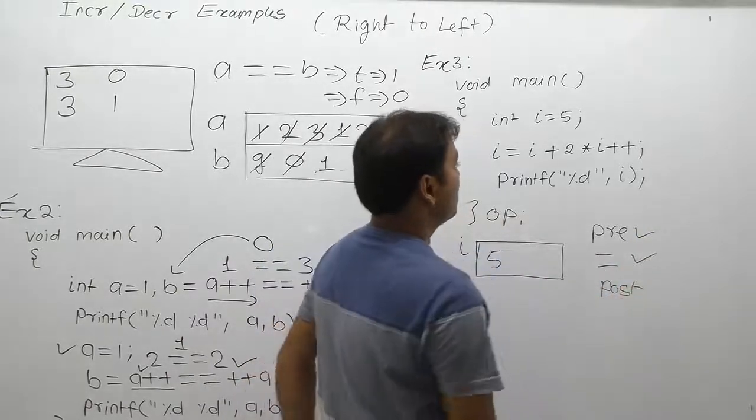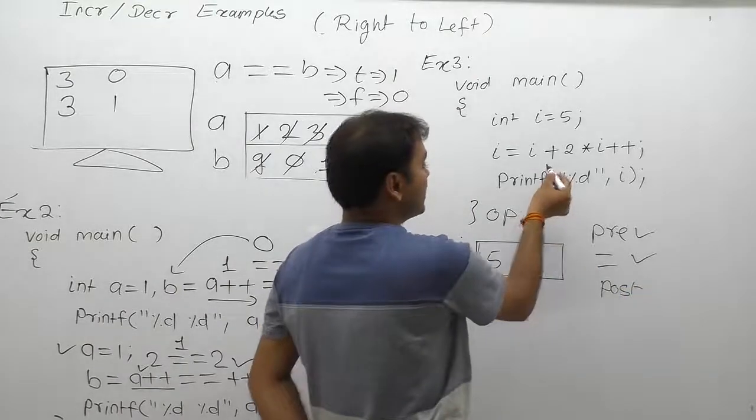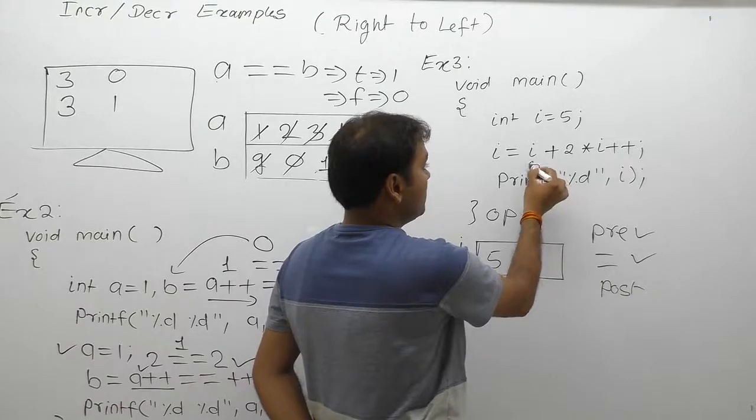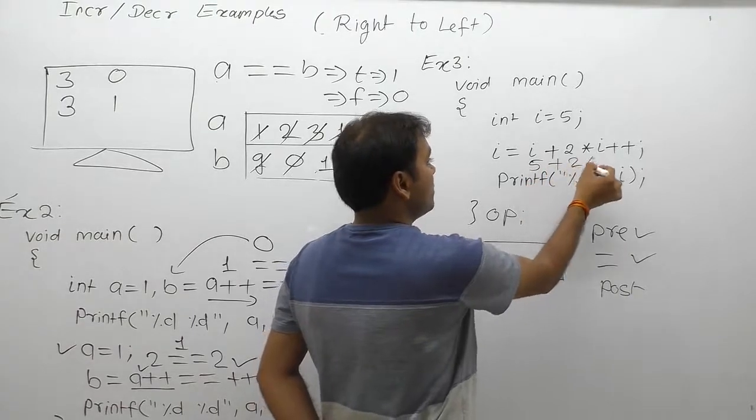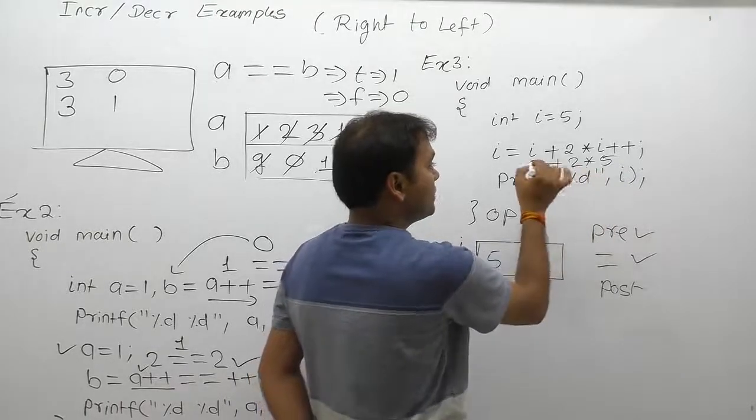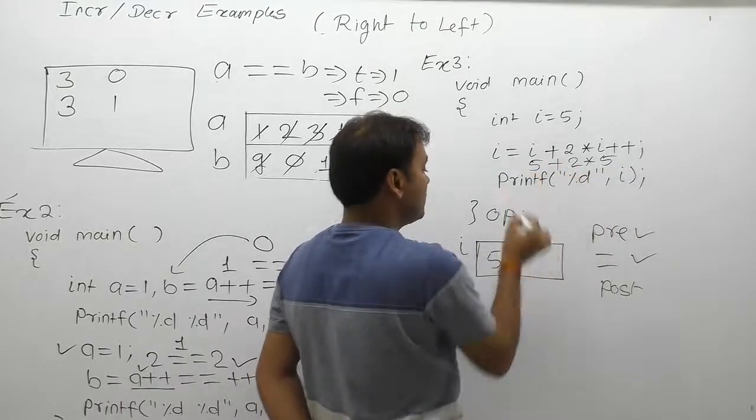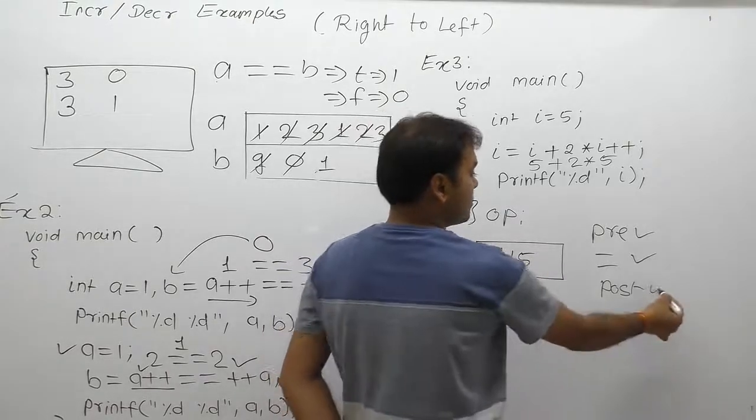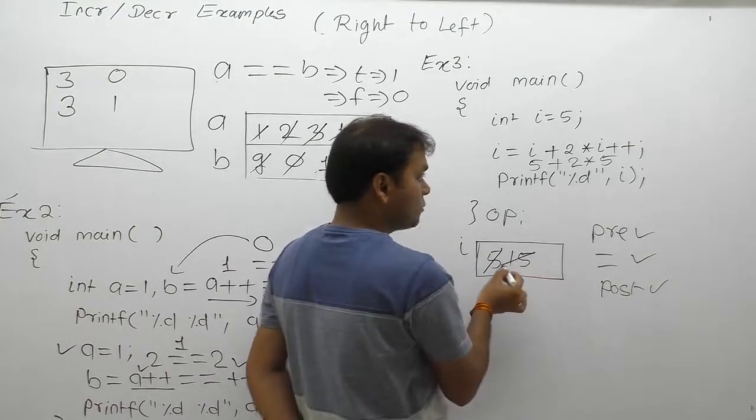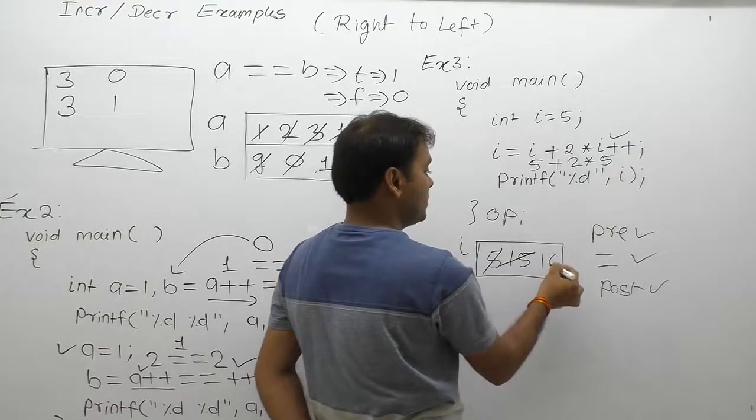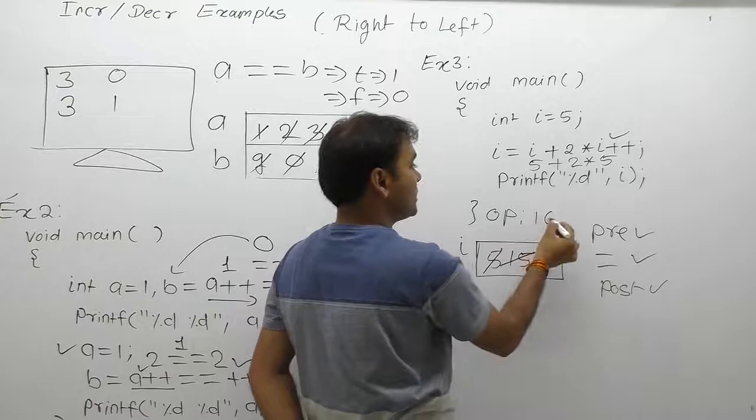Assignment is performed. Assignment according to current value of i which is five, five plus two multiply by five. Result is ten plus five is fifteen. Fifteen is assigned to variable i, now i becomes fifteen. After that, post operation for i, therefore i becomes sixteen. Final output is sixteen.